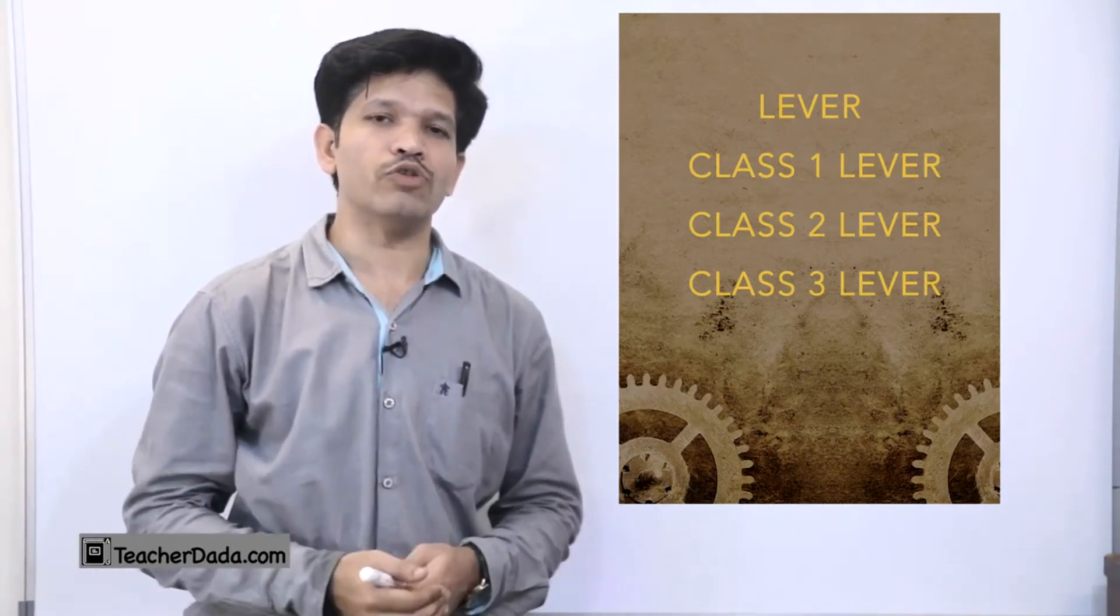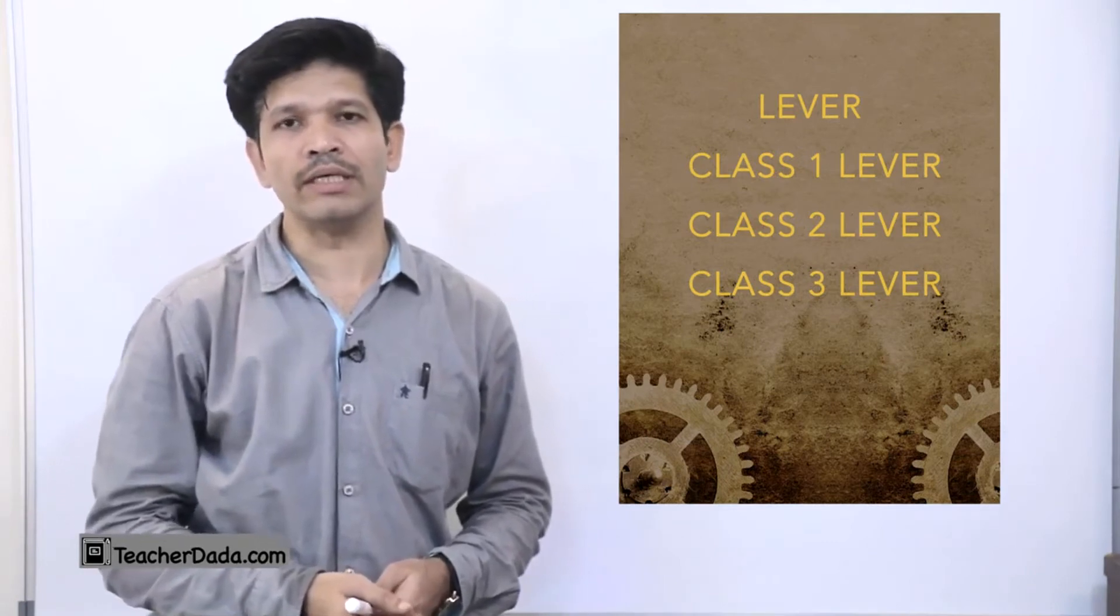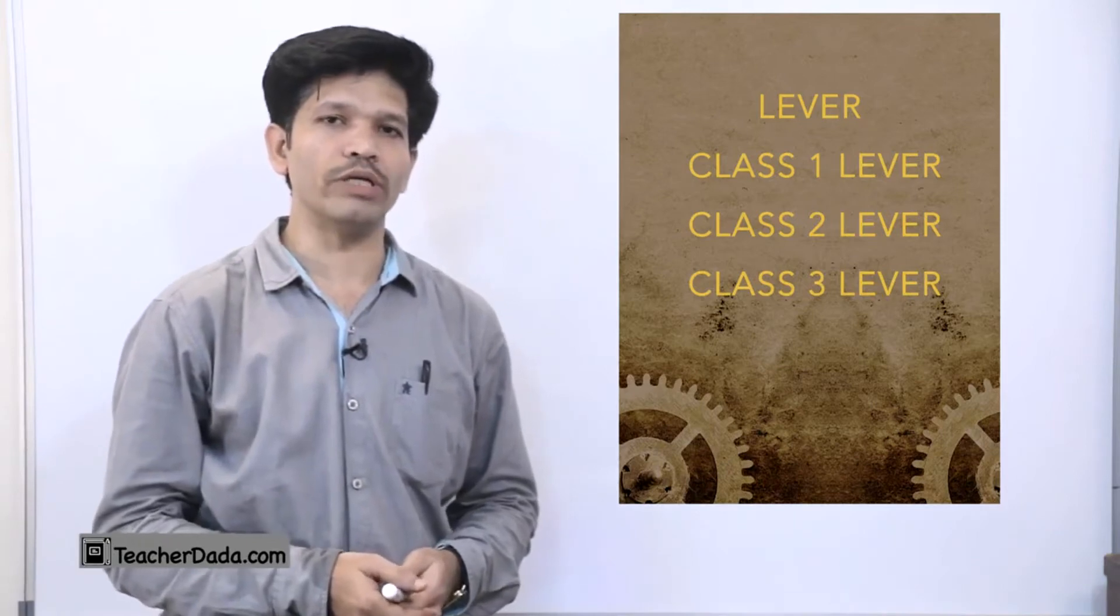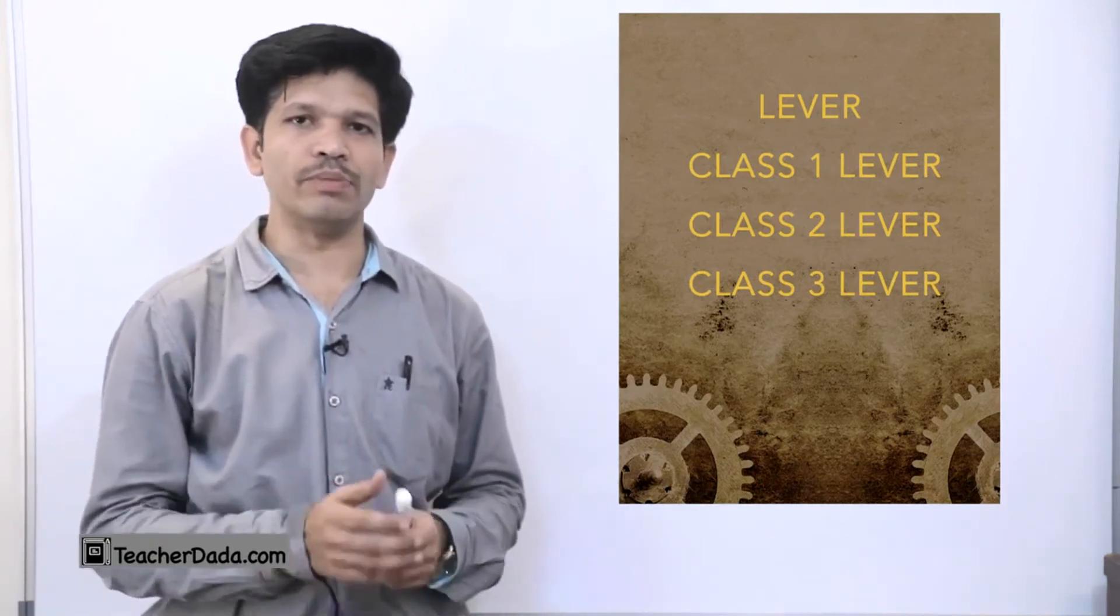There are two different types of machines - first is the inclined plane and the second is the lever. The inclined plane has two parts - screw and wedge - and the lever is just a simple rod.